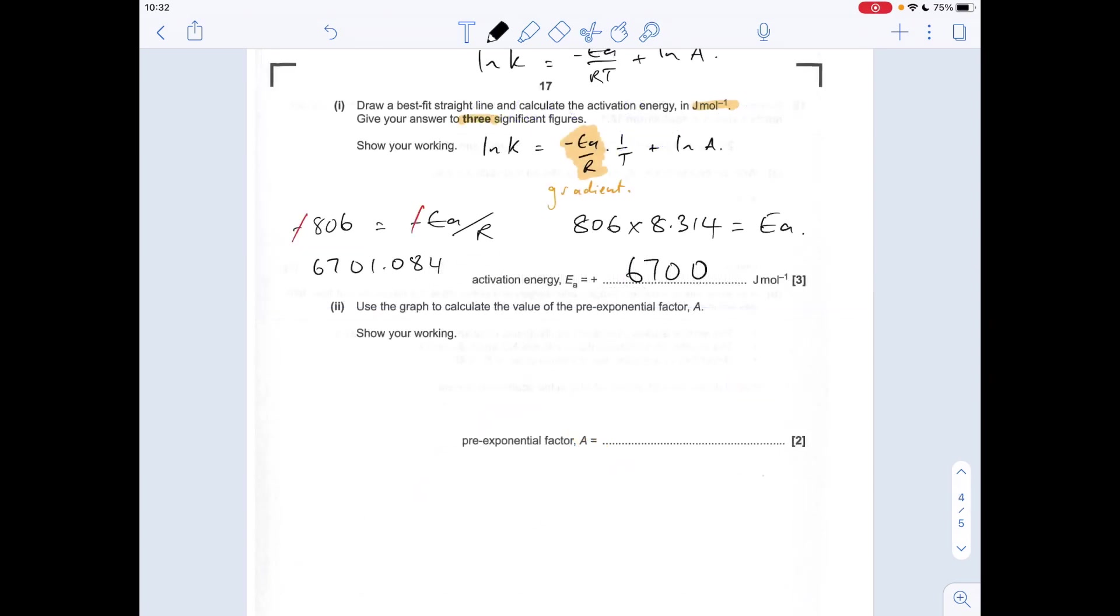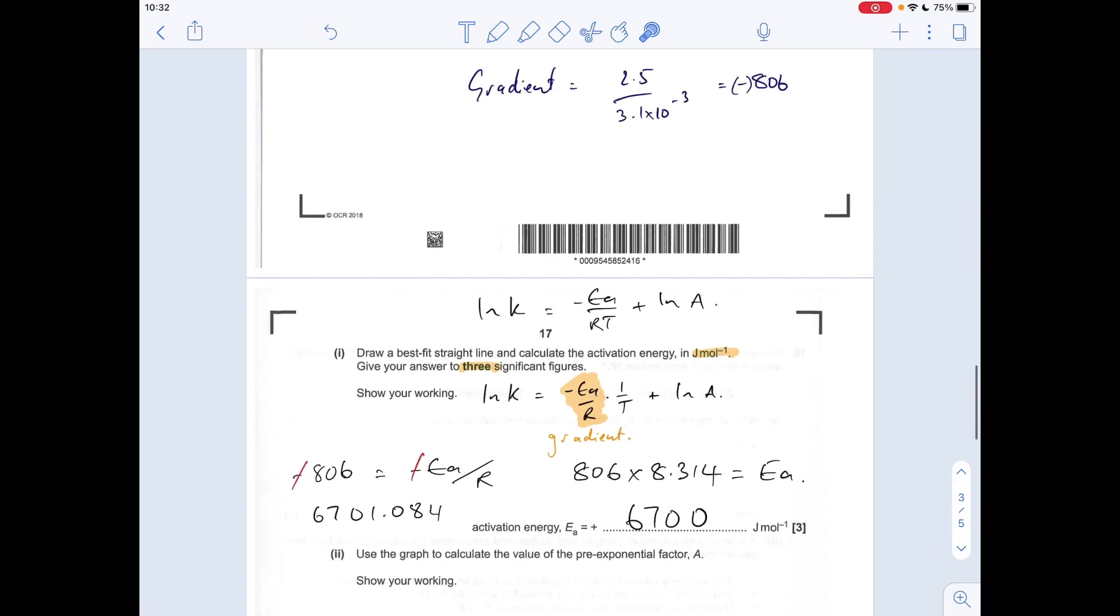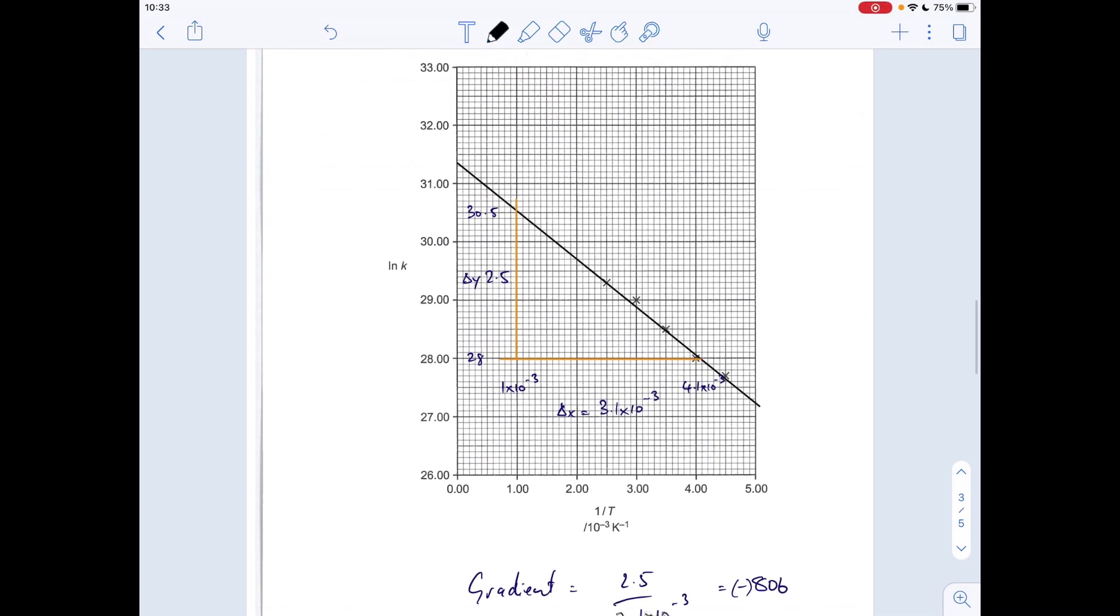And then the last thing we need to do is use the graph to calculate the value for the pre-exponential factor A. So if we go back to the equation, y equals mx plus c. There's your c term, that's your y-intercept. So the y-intercept is the ln of A. So using my graph, I would need to say that the ln of A is 31.35.